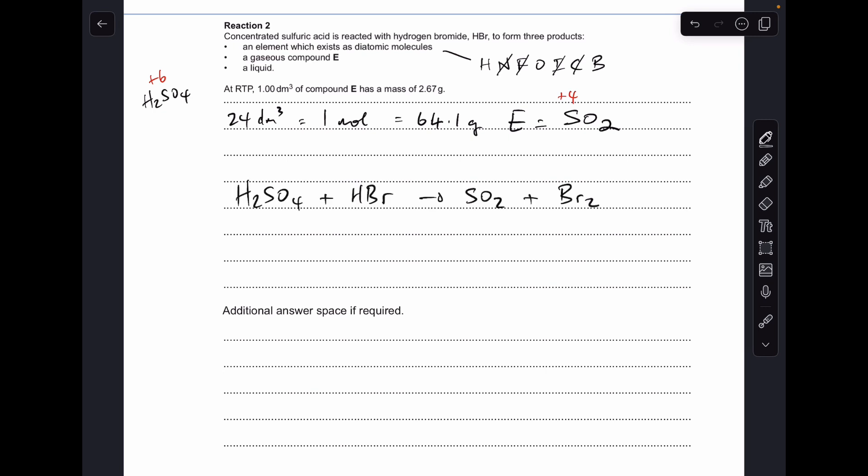So there's the beginnings of the equation. So all it's left to do now is work out what this liquid is, and the obvious choice here is H2O. Now we just need to balance it. So we're going to need a 2 in front of the HBr and a 2 in front of the H2O.